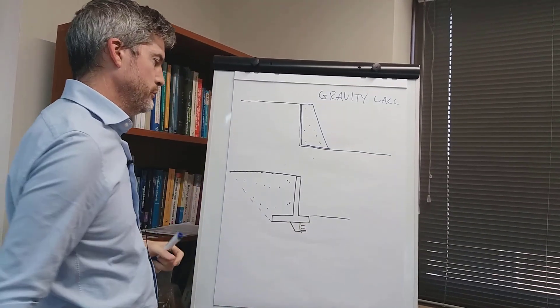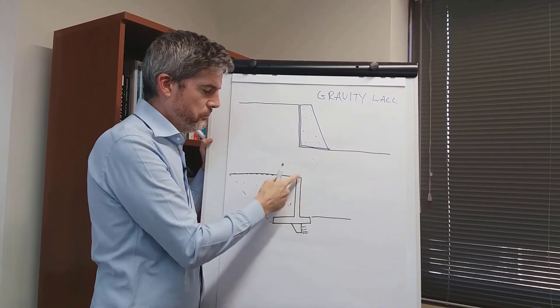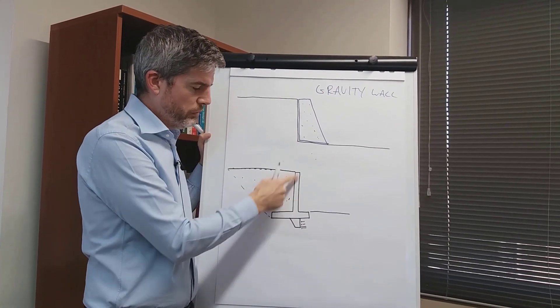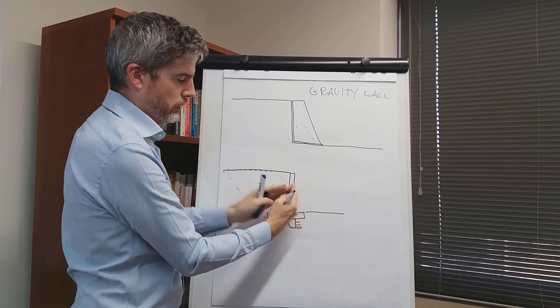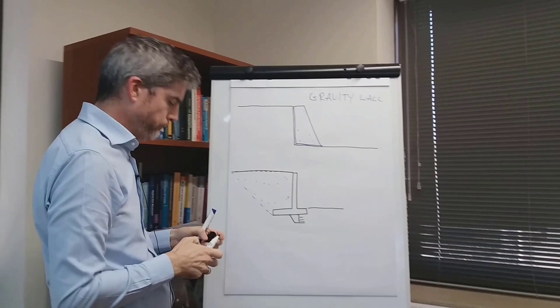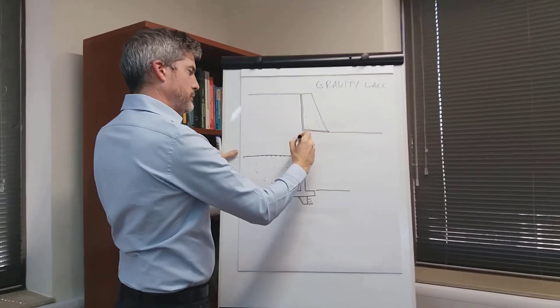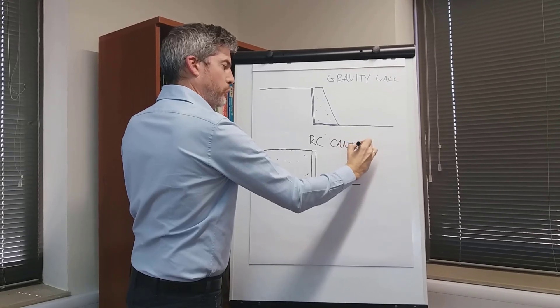Again, you're restricted in height, maybe to around about five, possibly six meters. As this gets higher and higher, this concrete needs to get thicker and thicker, and the base needs to get bigger. Everything gets just too big and impractical. That is called the reinforced concrete cantilever wall.